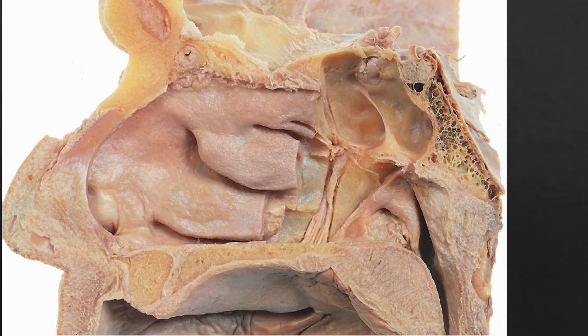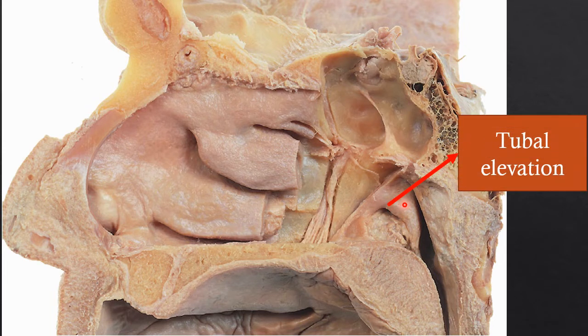Above the cartilaginous part of the Eustachian tube opening there is an elevation called the tubal elevation. Sometimes they may pierce this and ask you to identify that structure. The Eustachian tube opening is actually trumpet-shaped — the widening anterior part of the trumpet is present here, and surrounding this widening part you can identify the elevation called the tubal elevation.